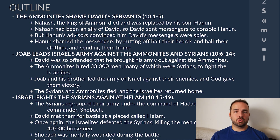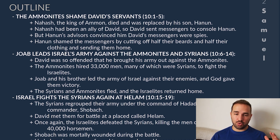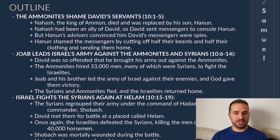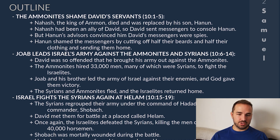David's response is recorded in section two, verses 6 through 14: Joab leads Israel's army against the Ammonites and the Syrians. David was so offended that he brought his army out against the Ammonites. The Ammonites realized they were in trouble, so they hired 33,000 men — many of which were Syrians — to fight the Israelites. Joab and his brother Abishai led the army of Israel against their enemies, and God gave them victory. The Ammonites and the Syrians fled, and the Israelites returned home.